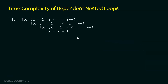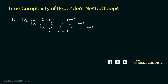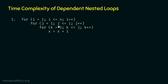Here is the example. Can we say this is a dependent nested loop structure? First of all, this is a nested loop structure because at least one loop is within another loop. This for loop is within this for loop, and this for loop is within this for loop. So clearly this is a nested loop structure. Also, this is a dependent nested loop structure because in this for loop, the loop variable j is dependent on the loop variable i.